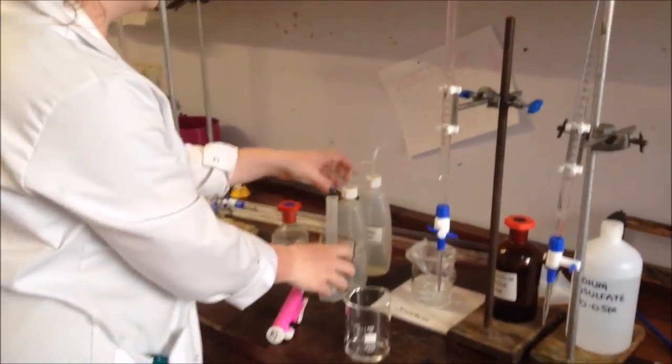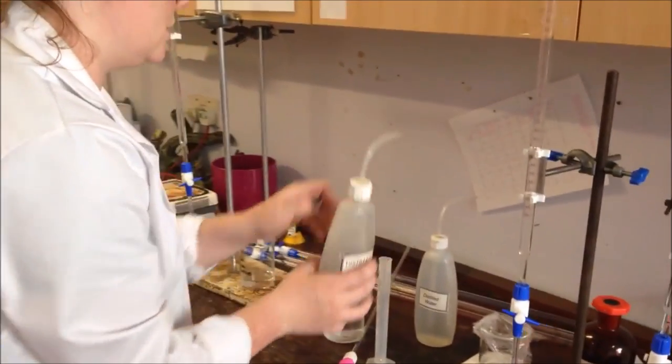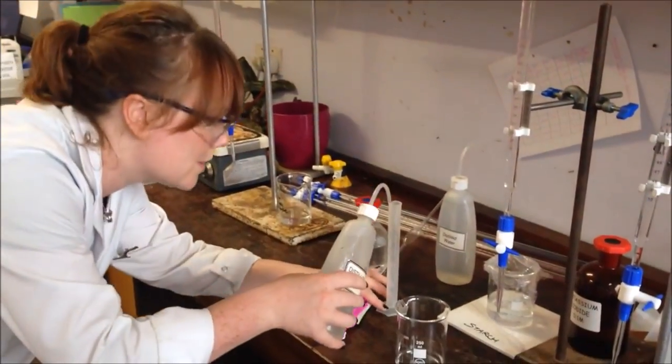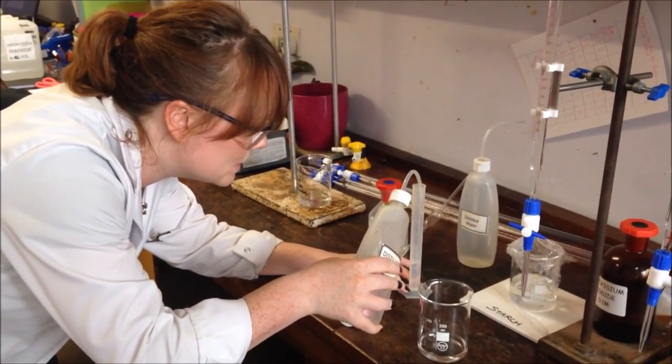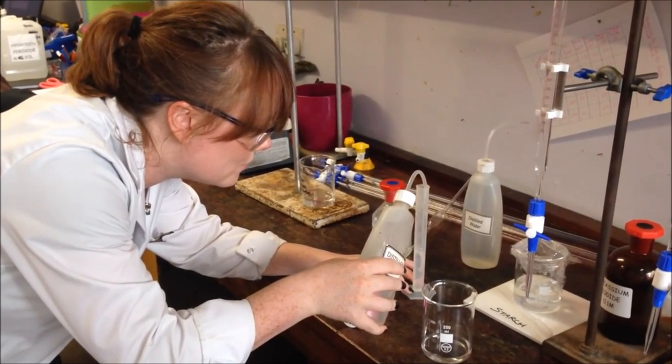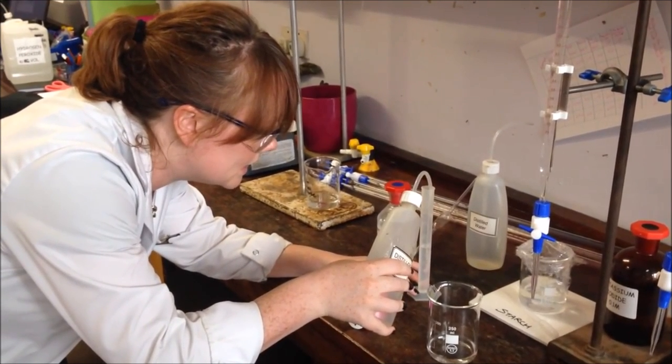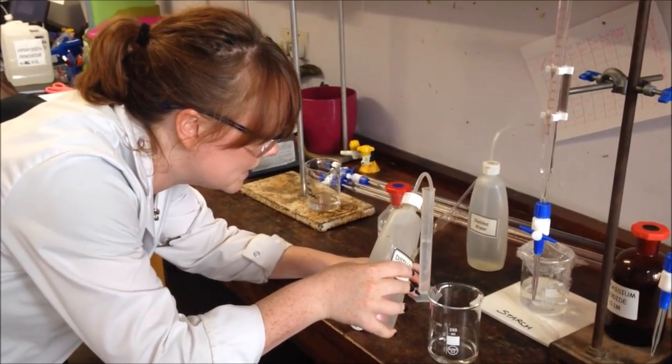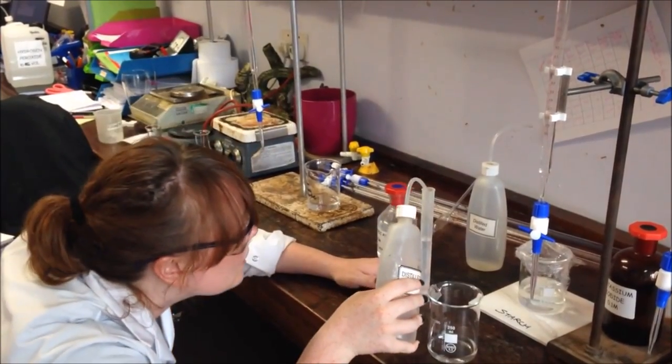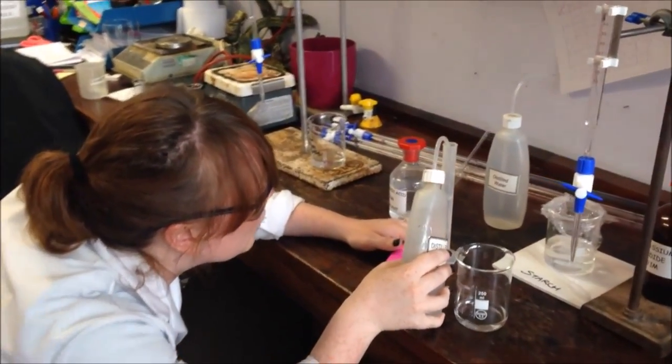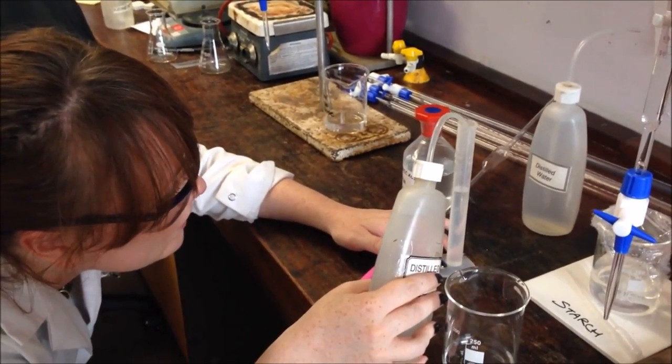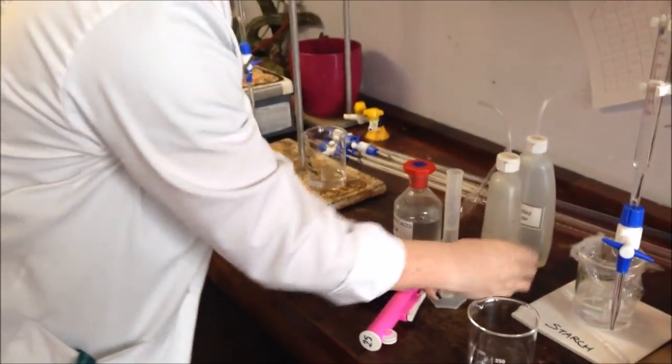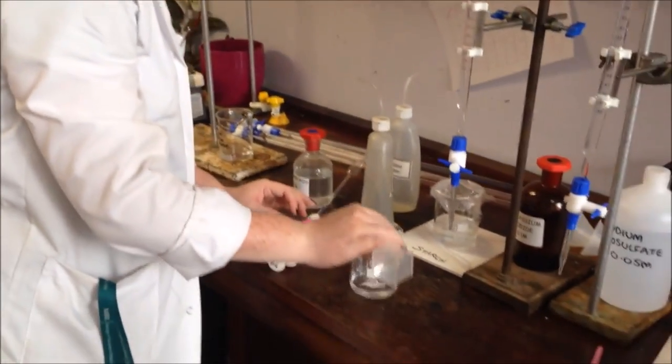Next, into my flask, I need to have 20cm³ of distilled water. I'm going to do that with a dropping bottle into a measuring cylinder, so I'm just going to measure that roughly until I get close to 20cm³. And that can now go in there.